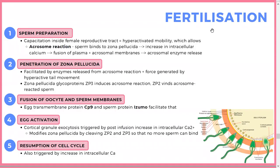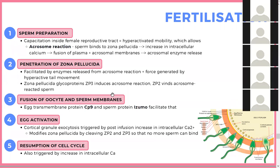Fertilization: the sperm undergoes capacitation in the female reproductive tract, gaining hyperactivated motility. This allows the acrosomal reaction — the sperm binds to the zona pellucida, intracellular calcium increases, and this triggers plasma membrane fusion and acrosomal enzyme release. The zona pellucida contains proteins ZP3 and ZP2 that bind to the acrosome-reactive sperm.